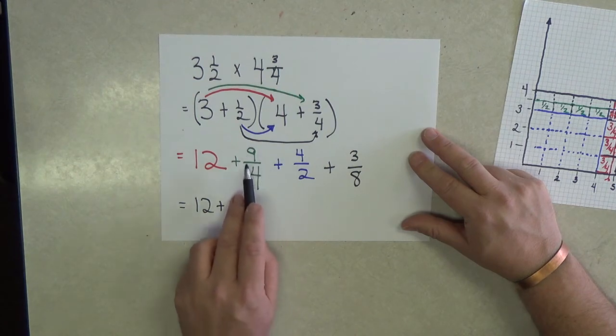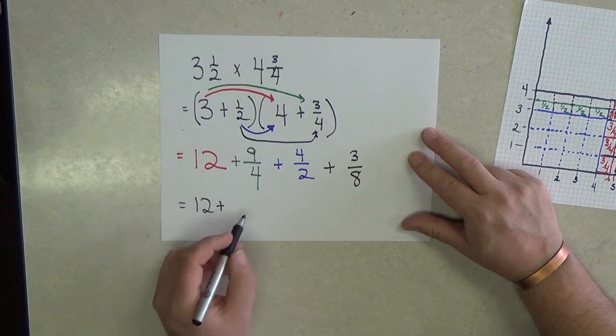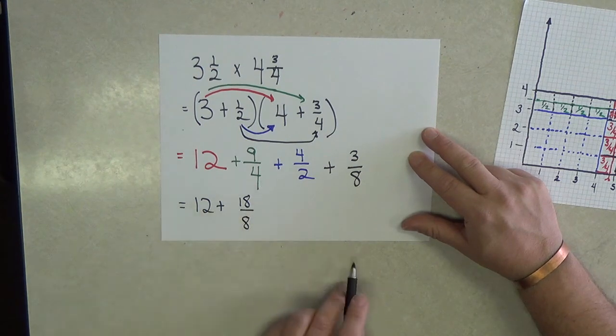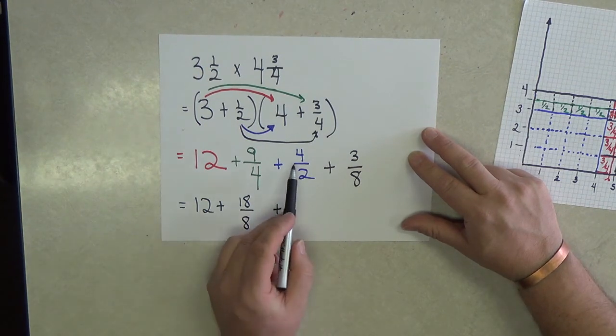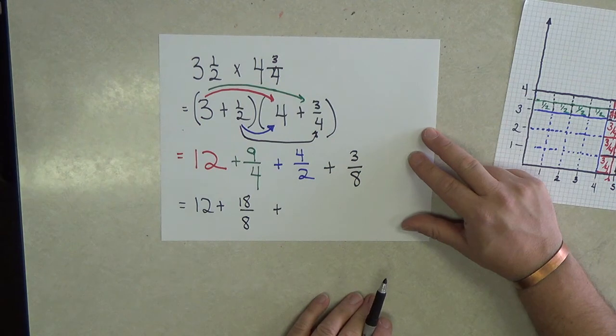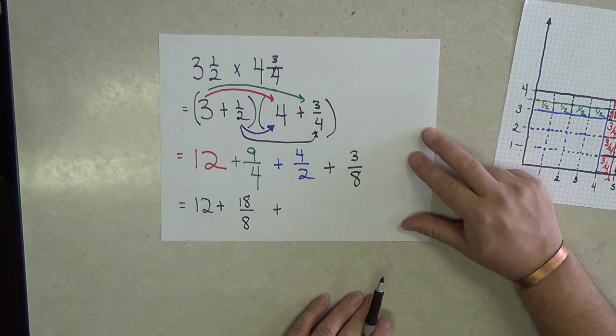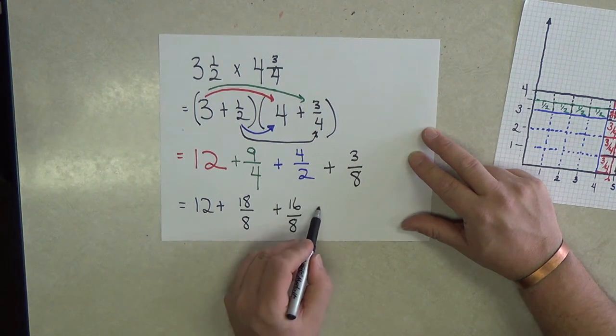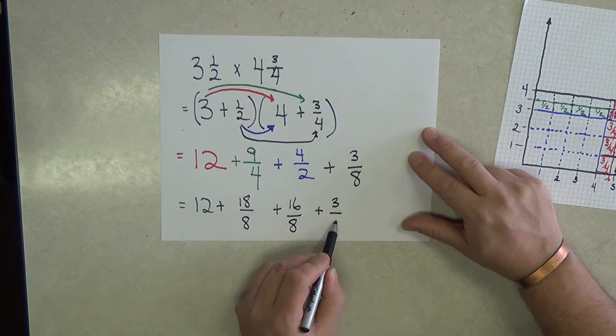So I'm going to double both the numerator and denominator to have 18 over 8 from this addend. And plus the 4 halves as an addend will need to be multiplied by numerator and denominator by 4. So I have 16 over 8 plus 3 over 8.